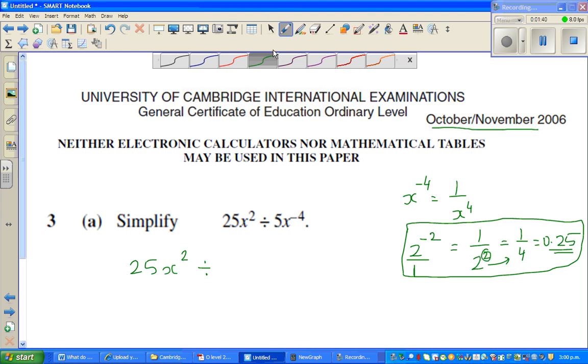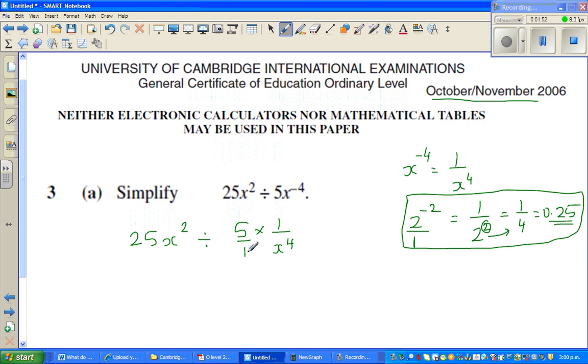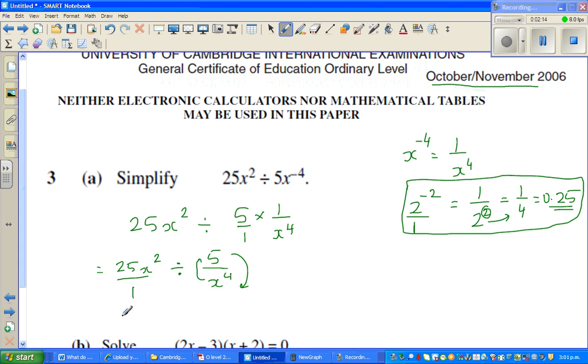So let's get started. So this is equal to 5 times 1 over x to the power of 4. As I explained in the last video, any number has a numerator and a denominator. So this is 25x squared divided by 5 times 1 is 5 over x to the power of 4. And the next step, when you change this into multiplication, this will come down and this will go up.